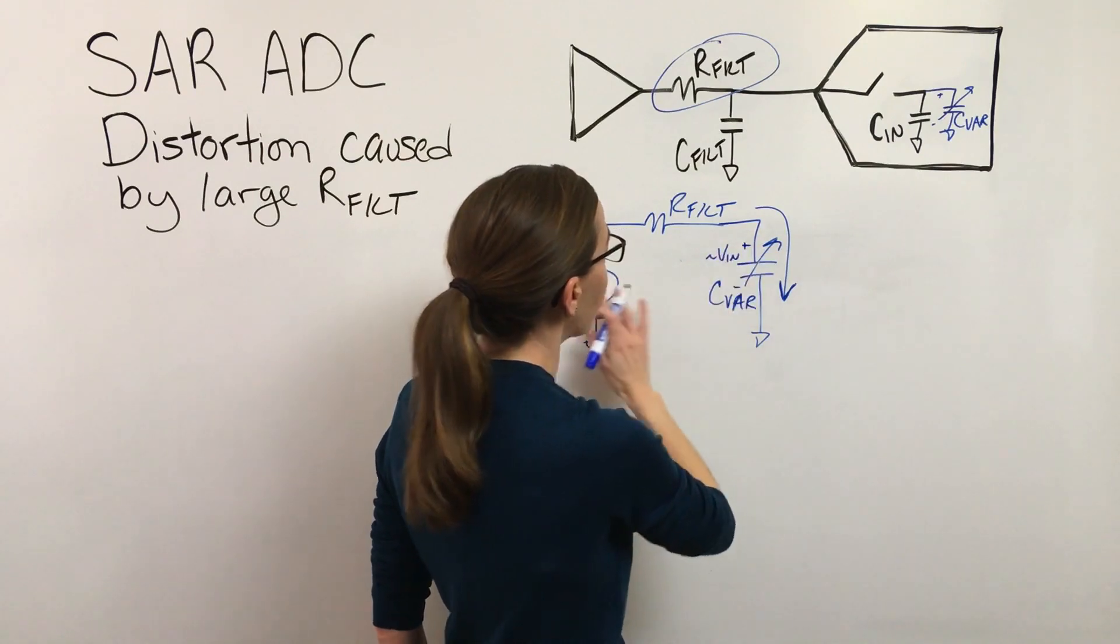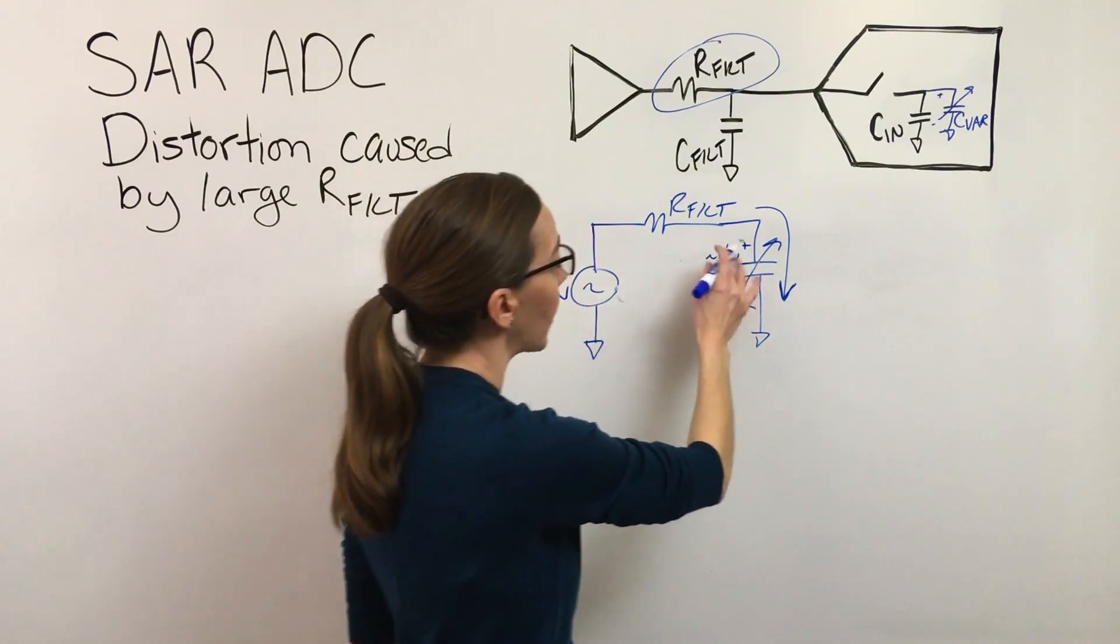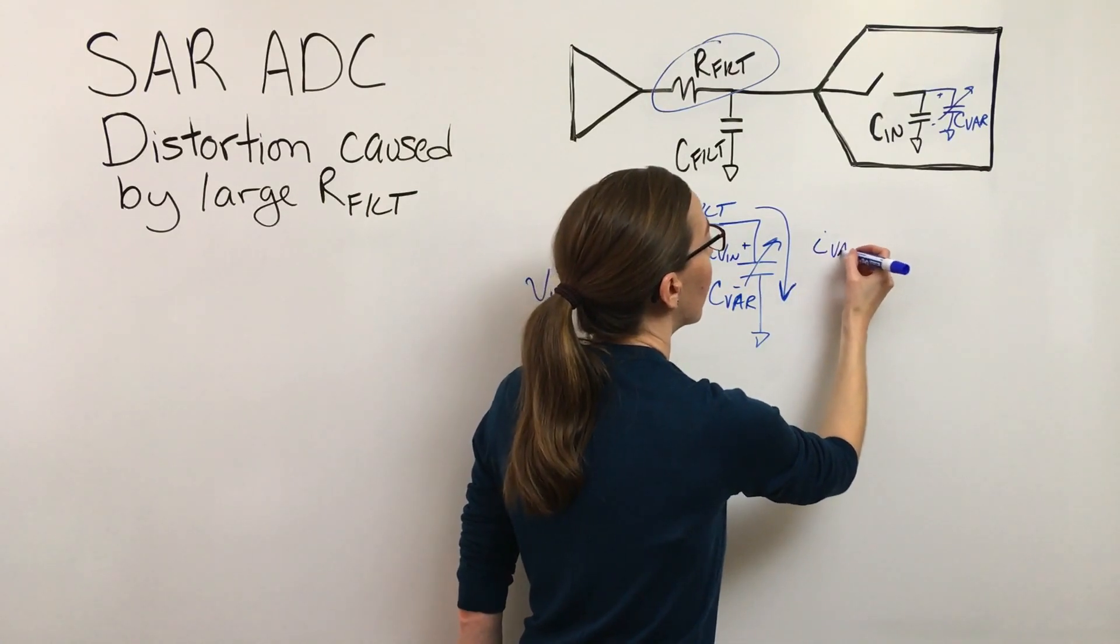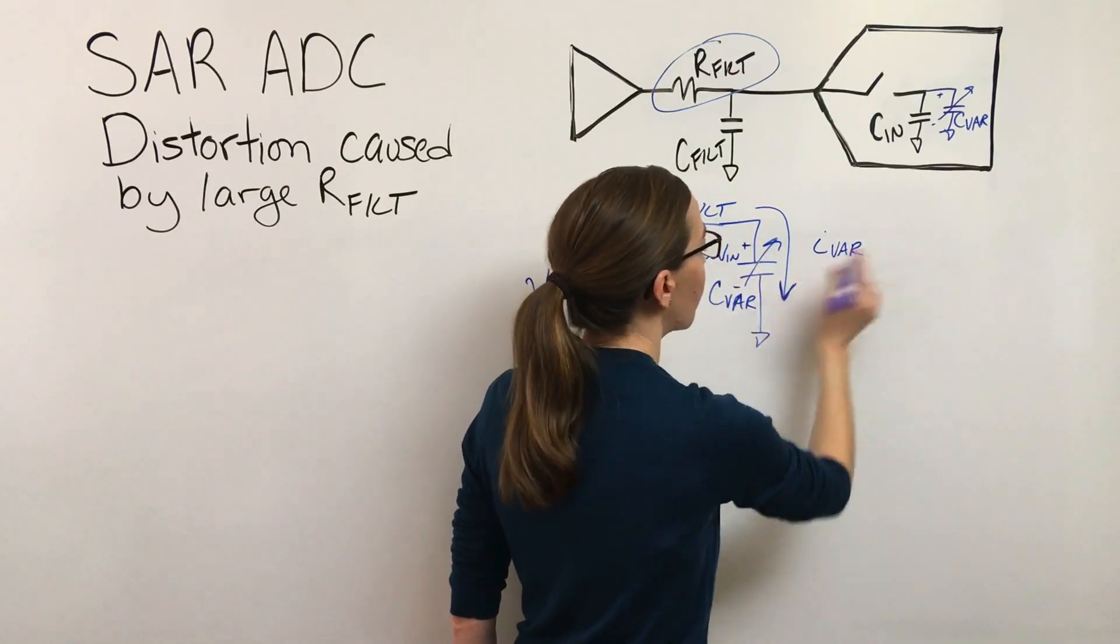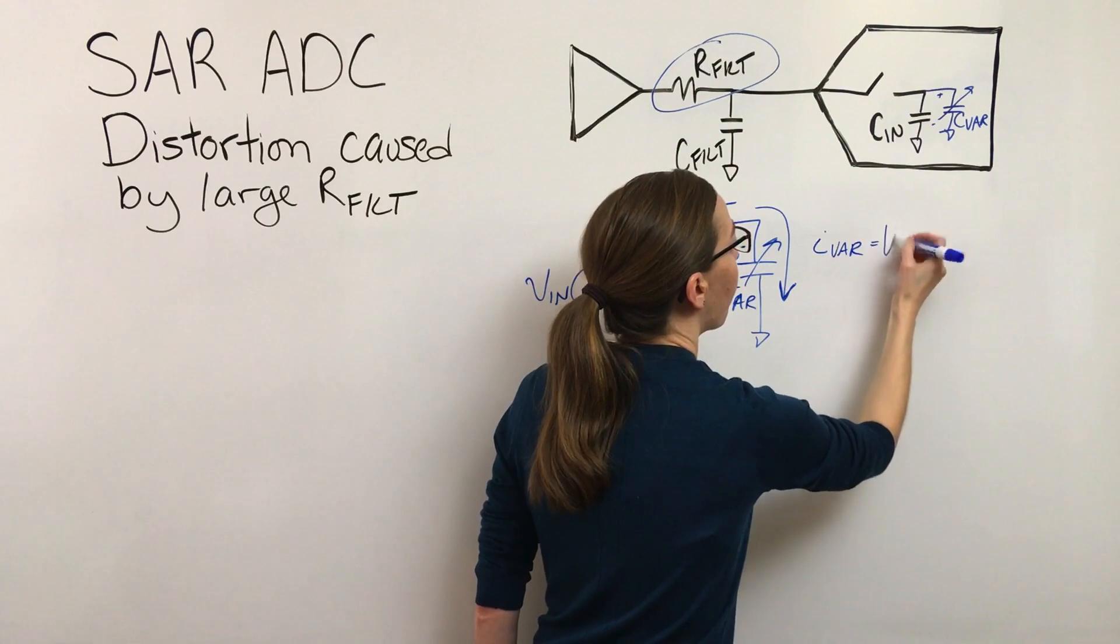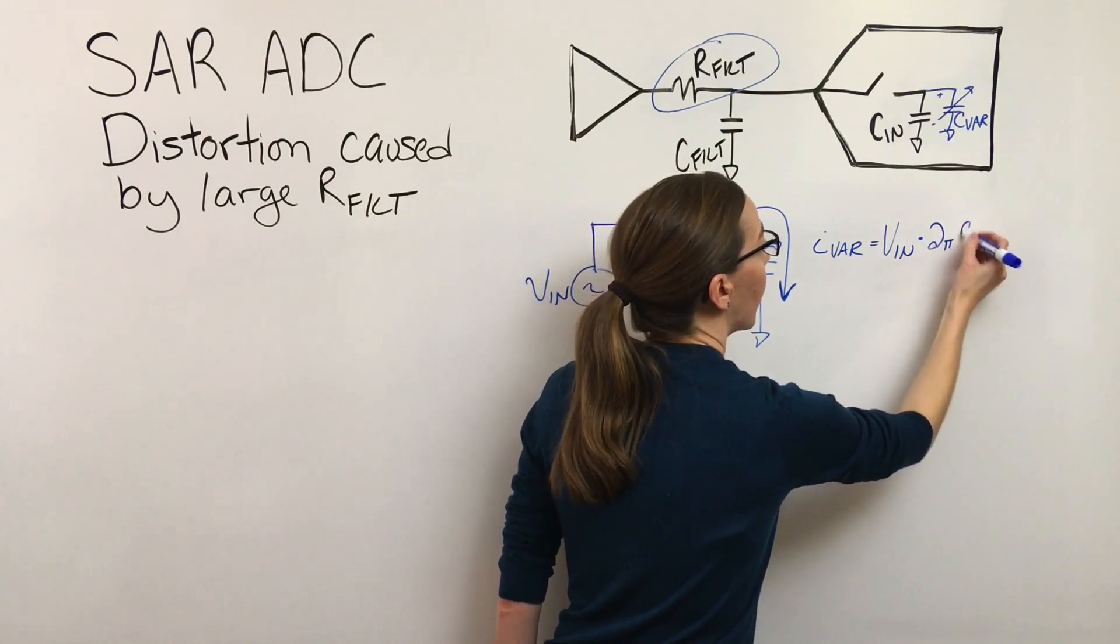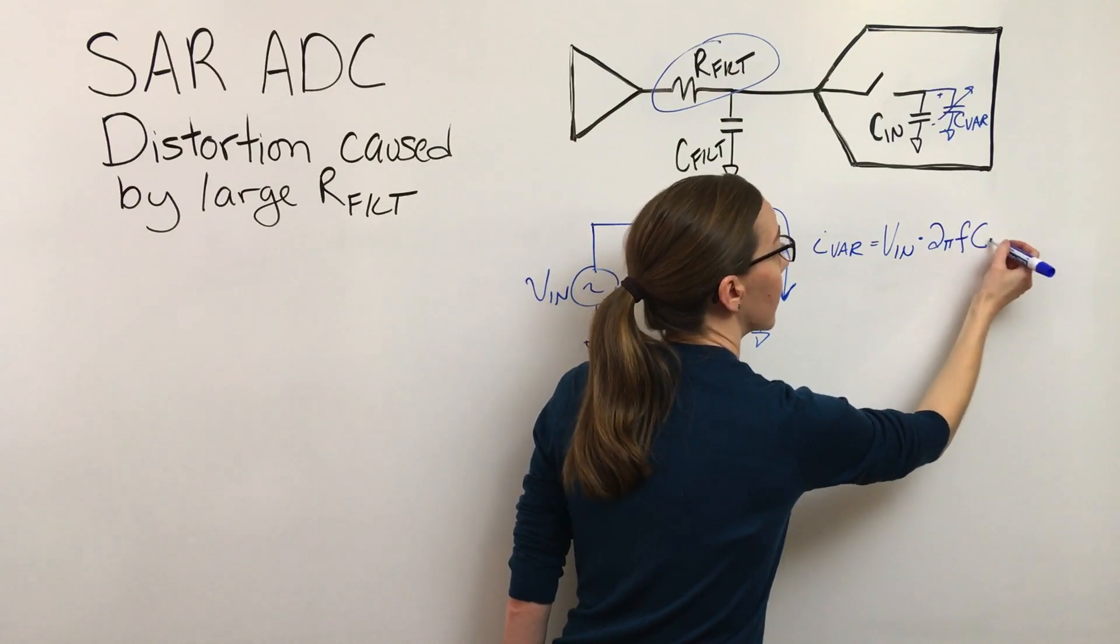We can assume that the voltage across this capacitance is essentially this input voltage—we can approximate it to be that. So this current that goes through this capacitance is just that input voltage times the conductance.